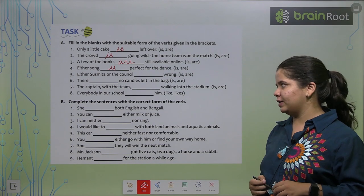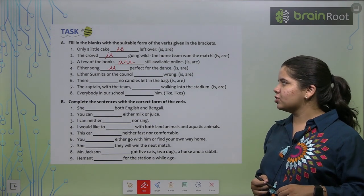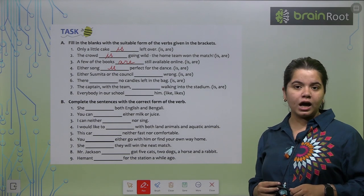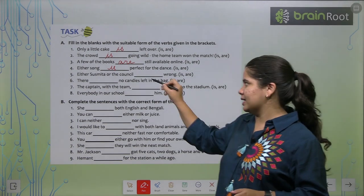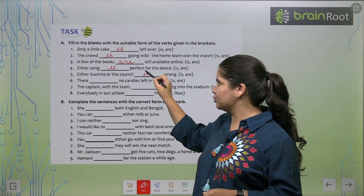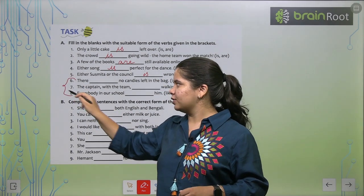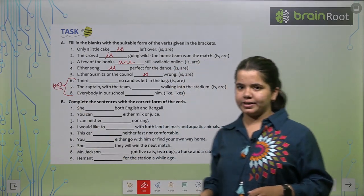Fifth one also we'll do. Last three will be your homework. Either Sushmita or the council is wrong. Yes, perfect. So, now I think that you have learnt this exercise and this chapter properly. So, last three are your homework. Do try them yourself.